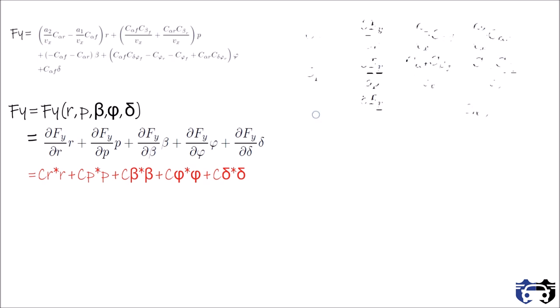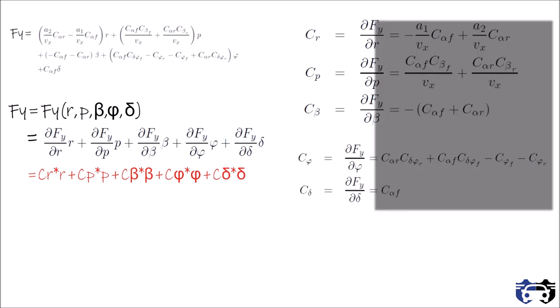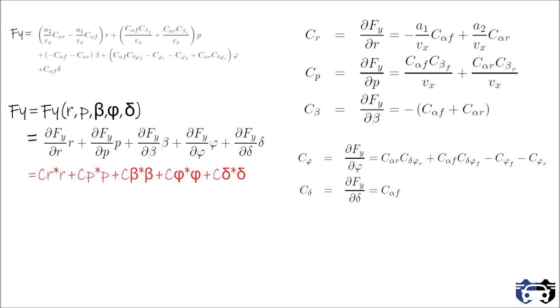So partial differentiation will give the values of various coefficients. The coefficients on left hand side of the equations can be defined using tire load curves. So here you got the values of all the coefficients in vehicle roll dynamics.